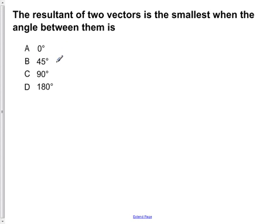The resultant of two vectors is the smallest when the angle between them is: A) 0 degrees, B) 45 degrees, C) 90 degrees, or D) 180 degrees.